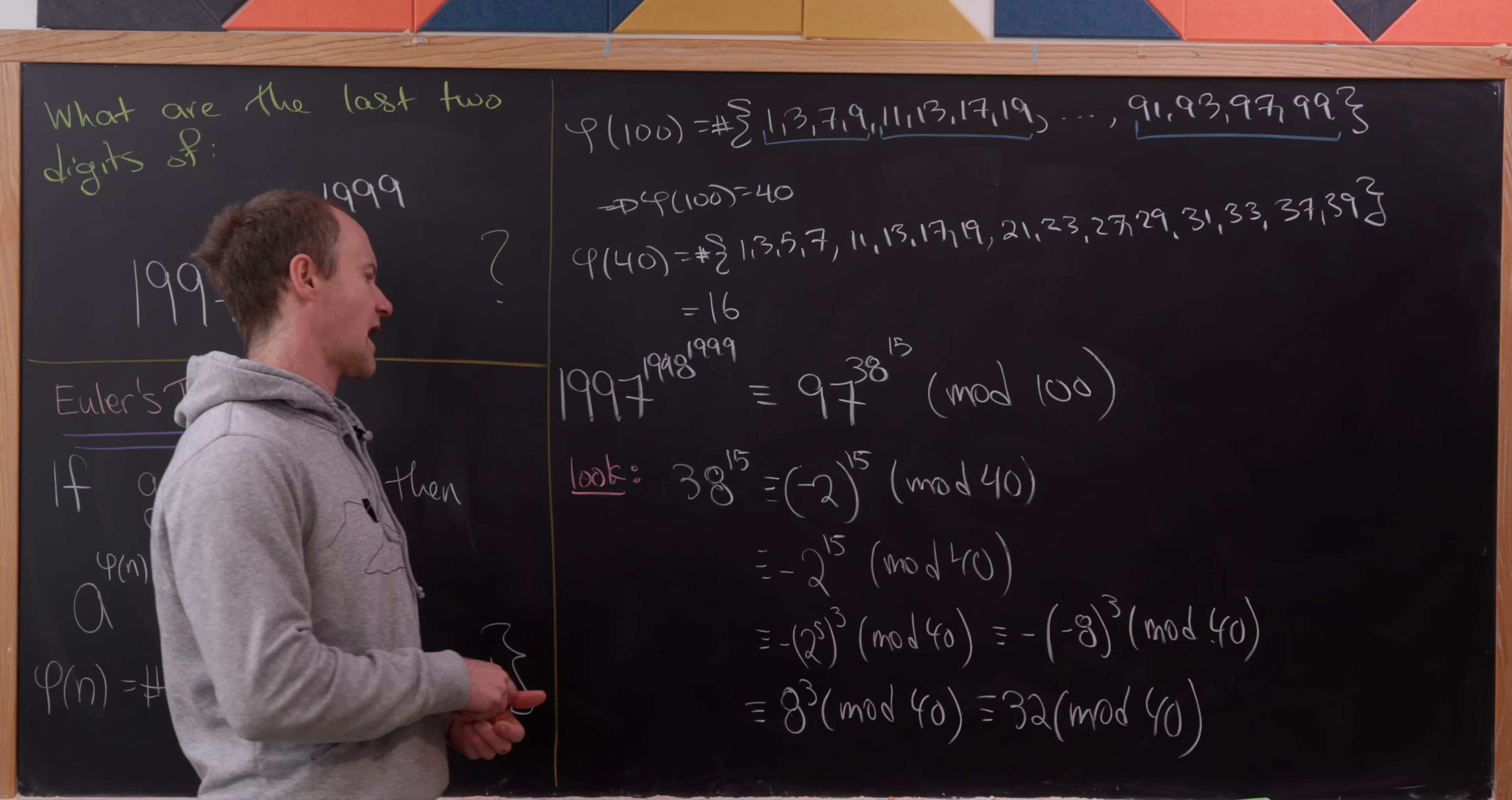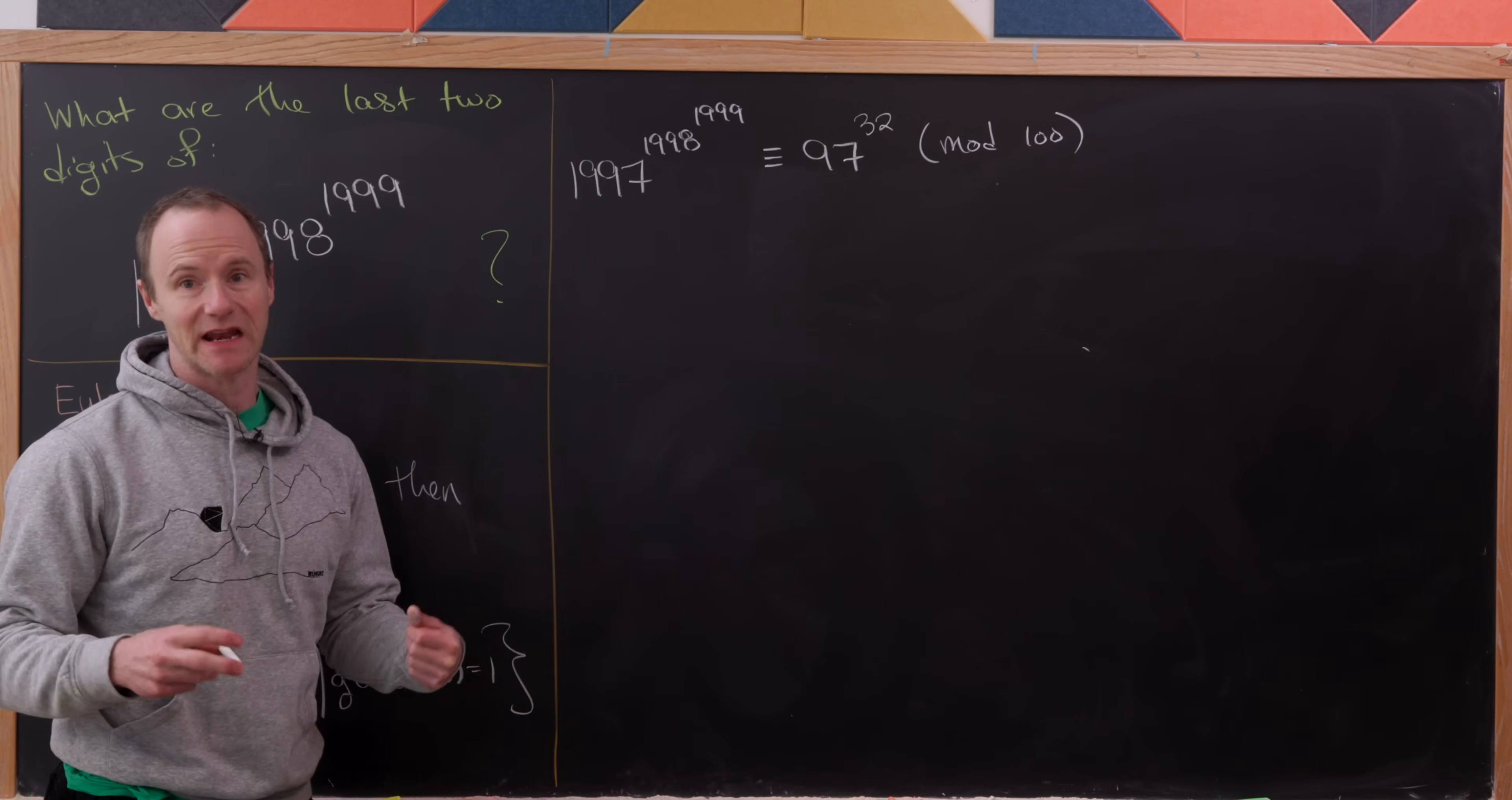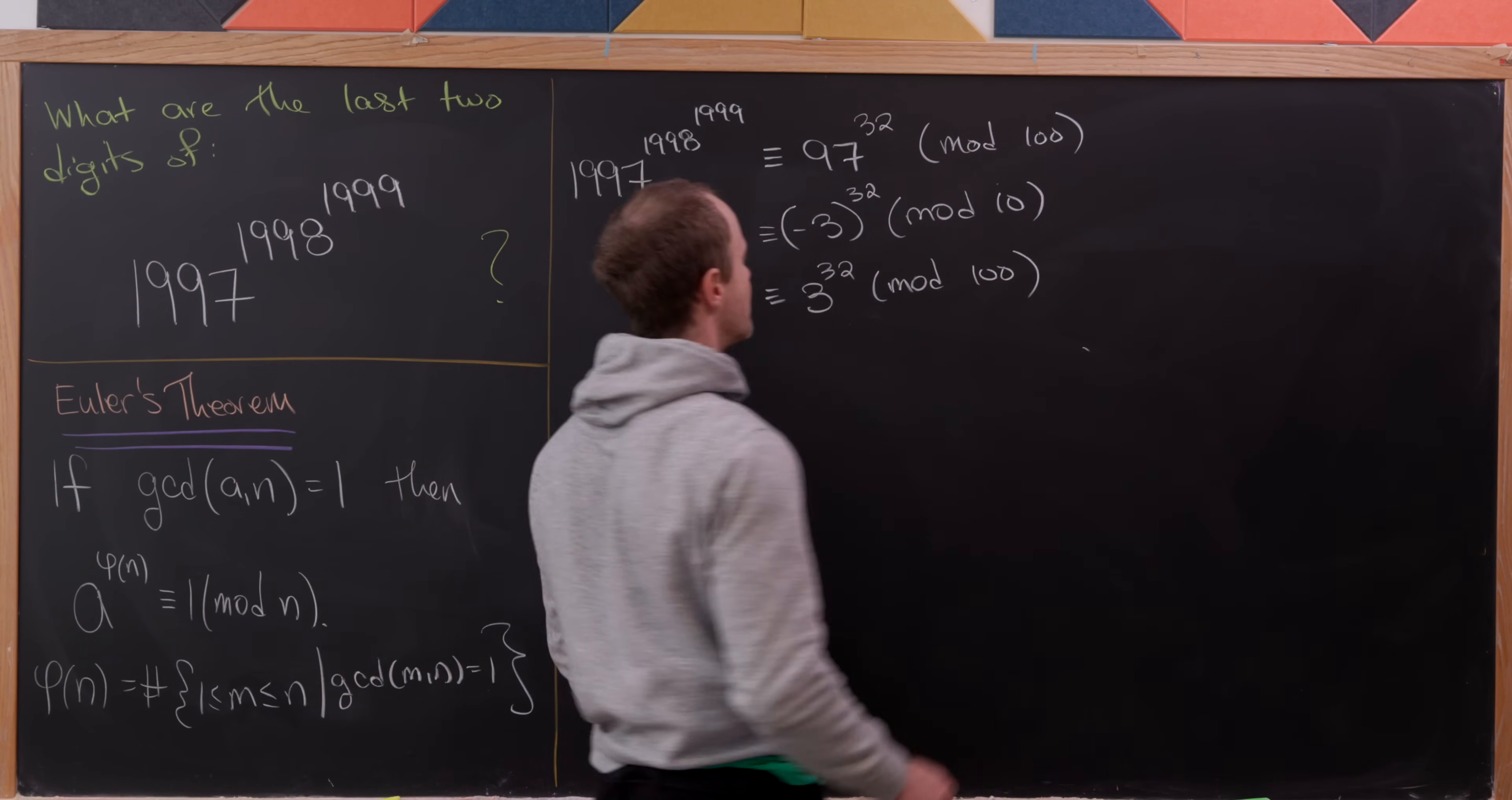Let's jump to the point we've calculated so far, which is we need to now calculate 97 to the power 32 mod 100. This is where we left everything off. The last two digits will be congruent to 97 to the 32 mod 100. I'm going to use the trick we did before using negative residues mod 100. 97 is the same as negative 3 mod 100, so I might as well replace 97 with negative 3. That's raised to the 32, but in the end the minus sign cancels out and we have 3 to the 32 mod 100.